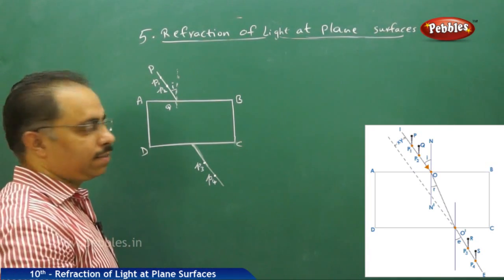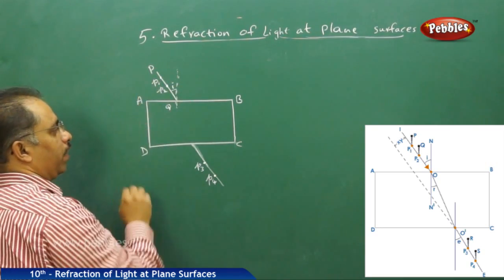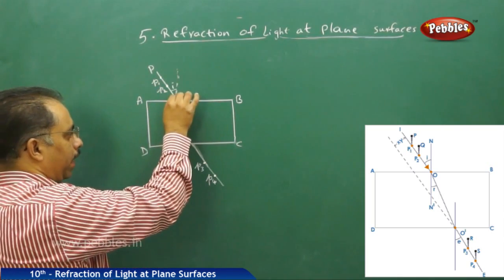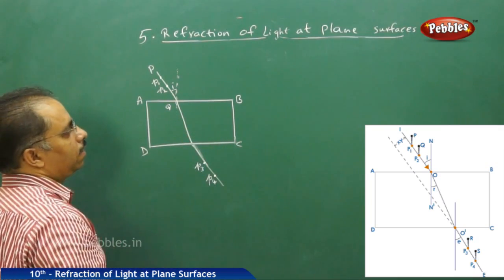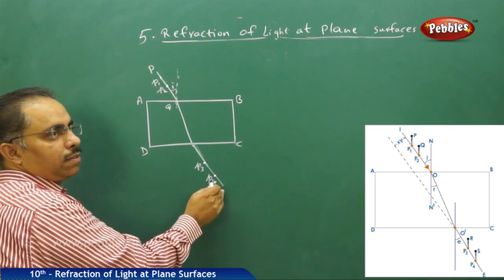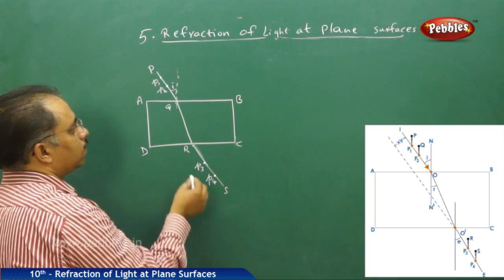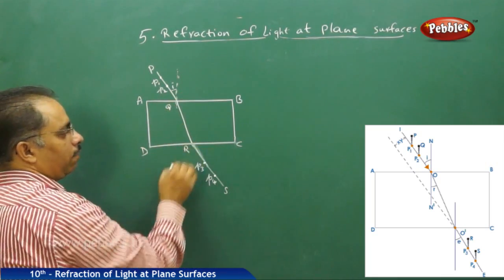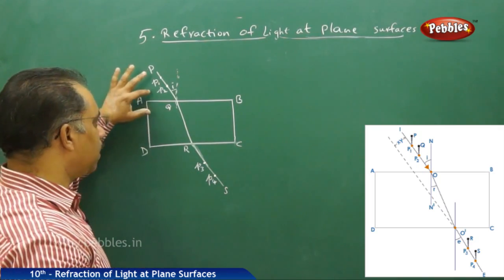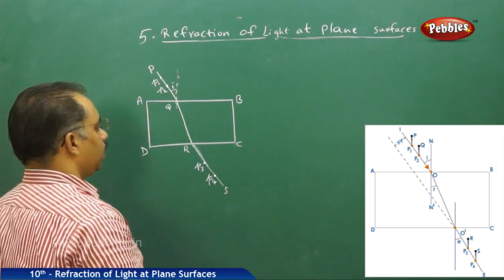Now I will remove the slab and join pins P3 and P4 to draw a straight line. This indicates that PQ is the incident ray. Once the light ray enters the glass slab, it bends and travels in a new direction. When it comes out of the glass slab, it emerges in another direction. Let us label the entry point R and exit point S, so QR will be the refracted ray — bending as it goes from the rarer medium (air) to the denser medium (glass).